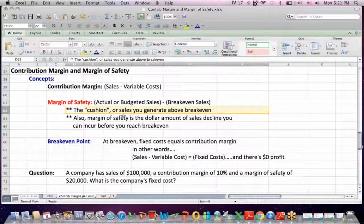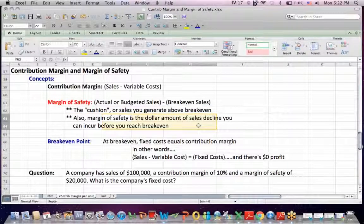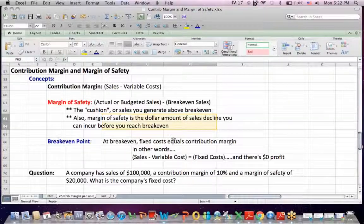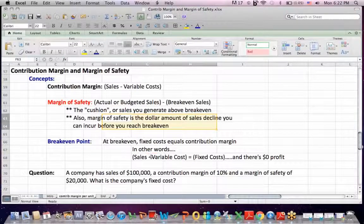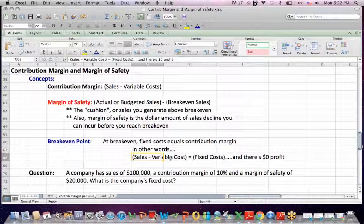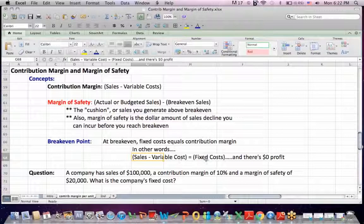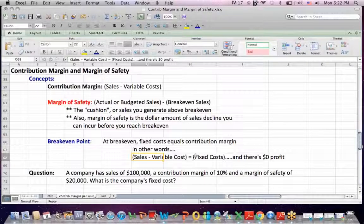So another way of thinking about it is, it's the dollar amount of sales that can decline before you reach break even. And again, break even is defined as sales less all costs, which would be less variable costs, less fixed costs with no profit. That would be break even point.